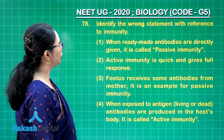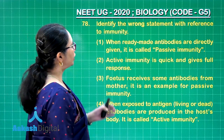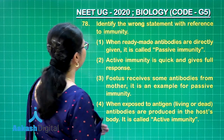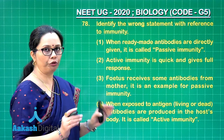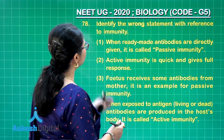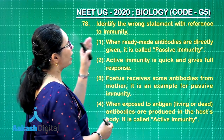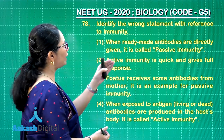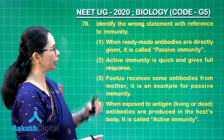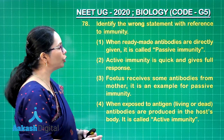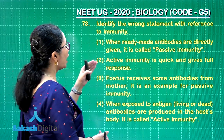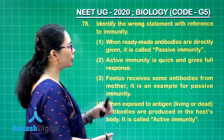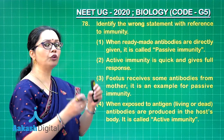Question 78: identify the wrong statement with reference to immunity. The first option states that when ready-made antibodies are directly given, it is called passive immunity — that is absolutely correct. Option 2 states active immunity is quick and gives full response — this is incorrect.